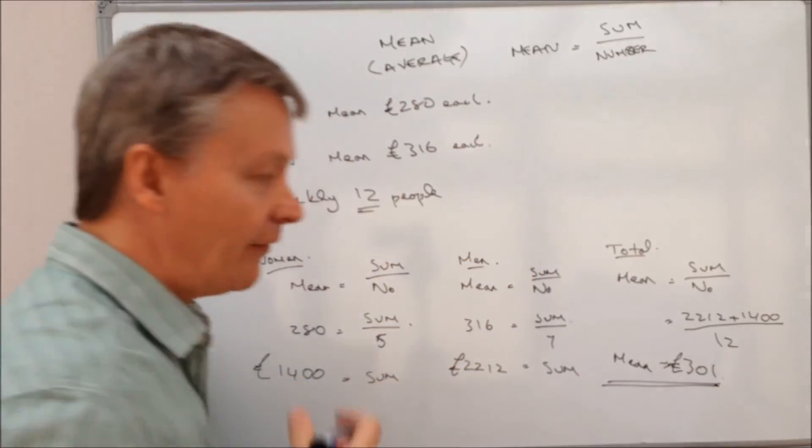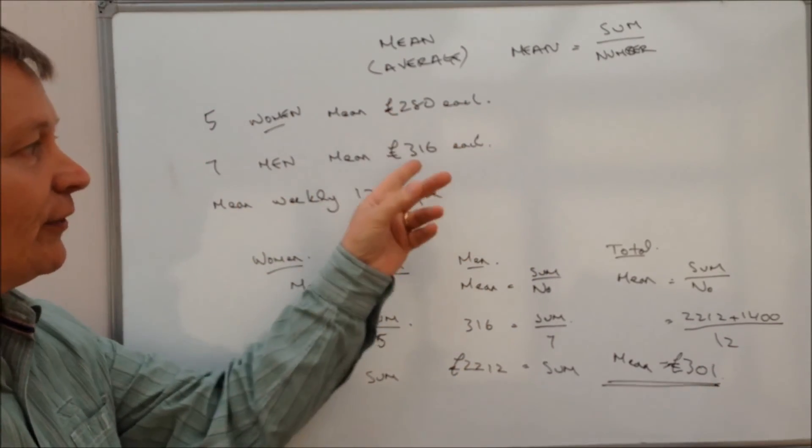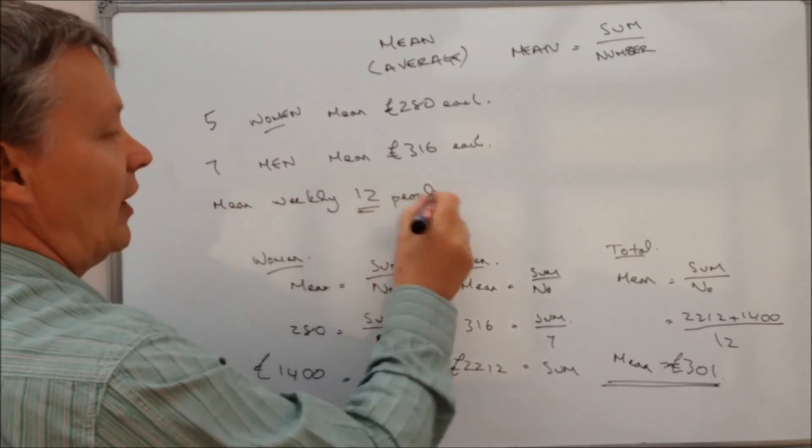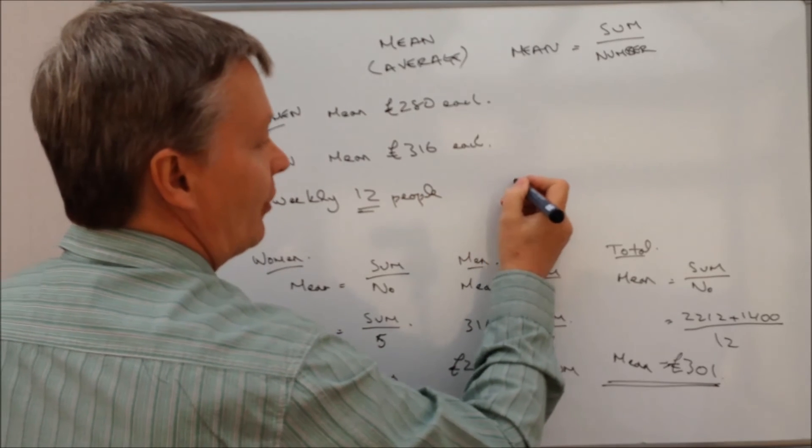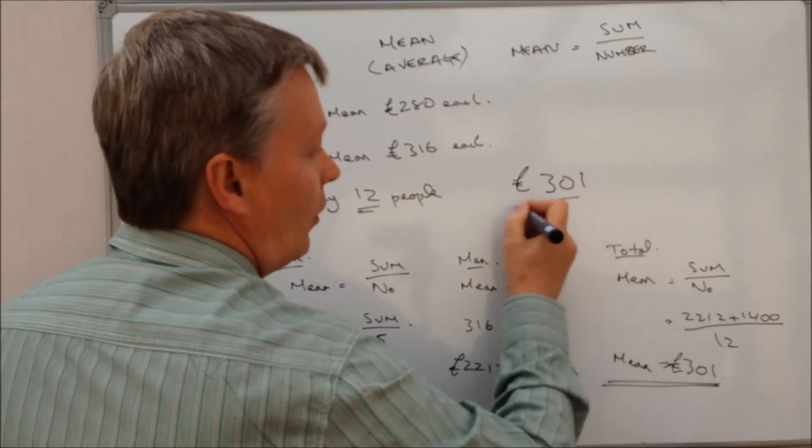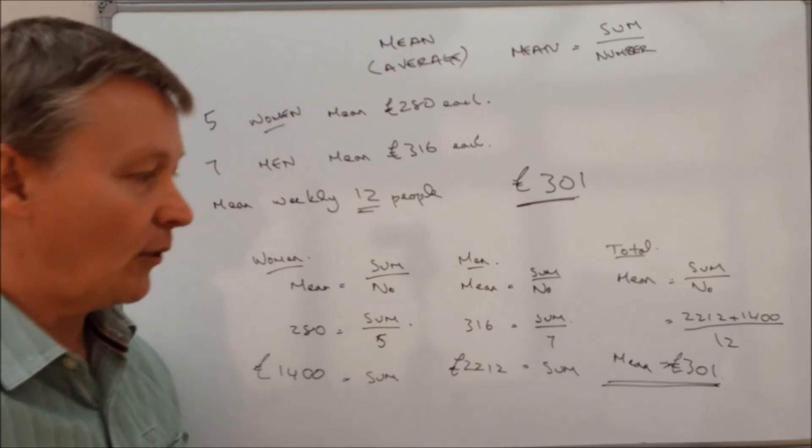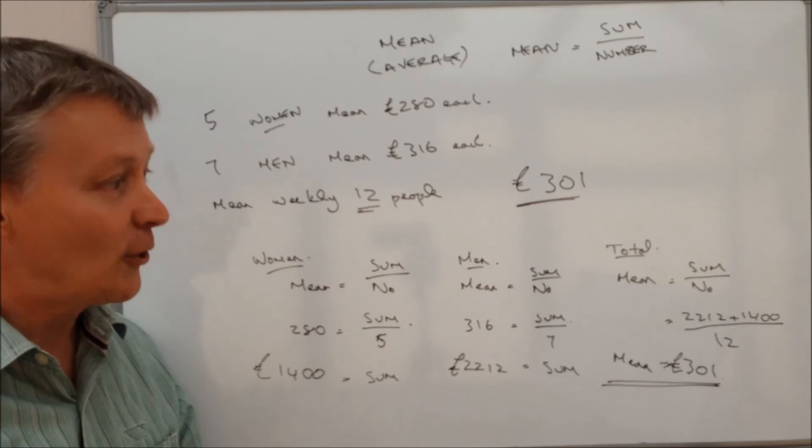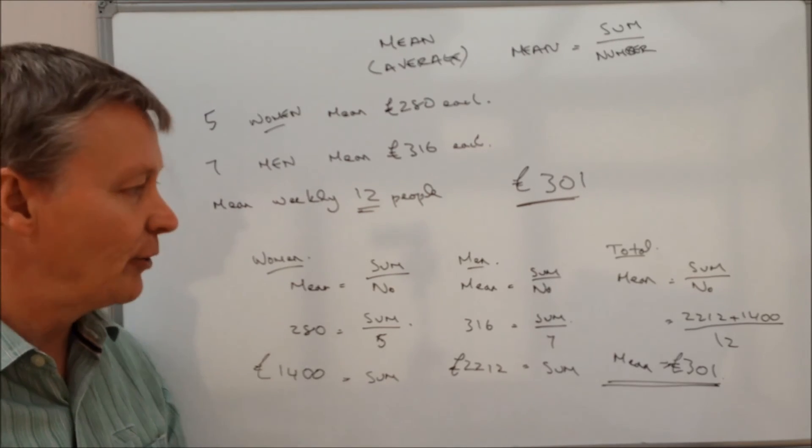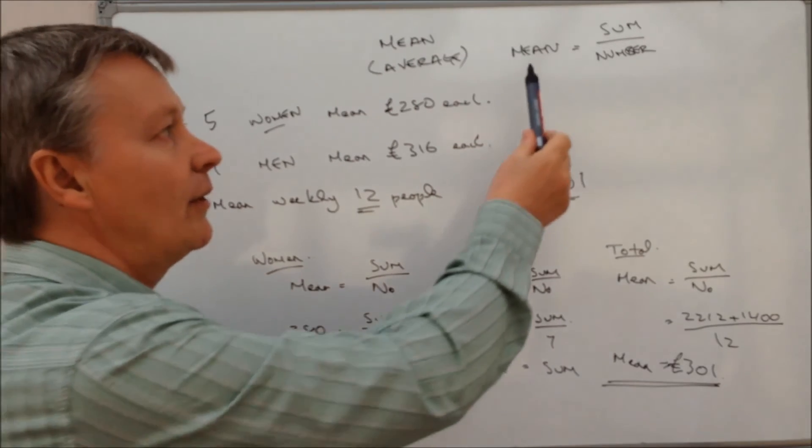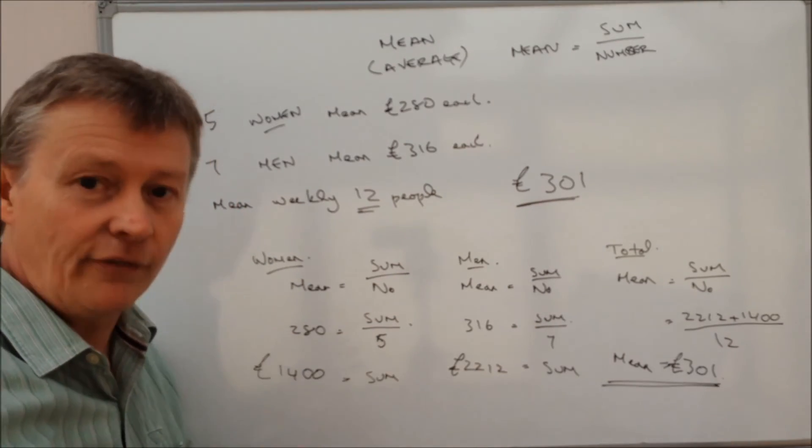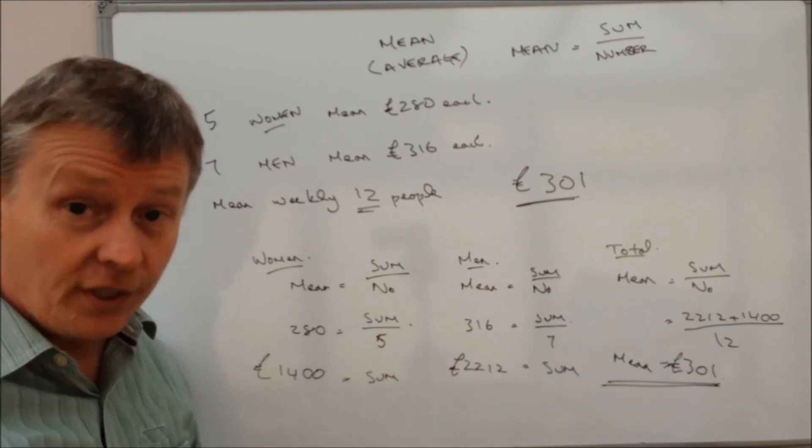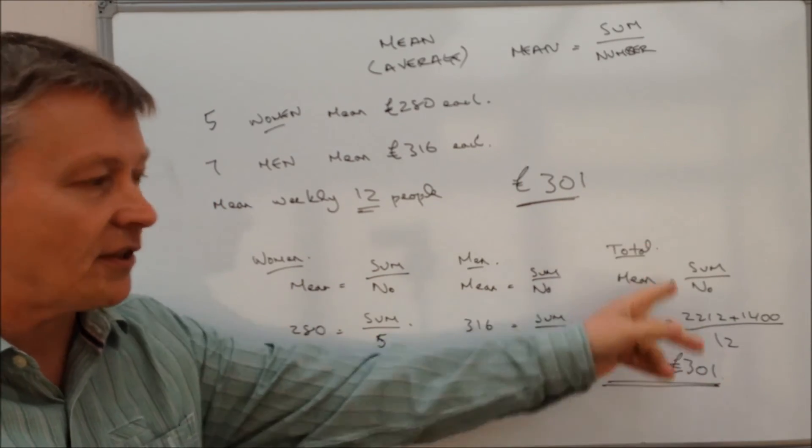And as we said before, you want to have this idea in your mind that it's going to be roughly about 300 pounds. And the actual mean weekly average for 12 people is going to be 301. That will answer your question. I hope that's okay for you. It is a bit of a wordy question. It does take a little bit of time to read through. But generally, once you've got the idea that mean equals sum over number, use that information and apply it to the situations that you've been given. And that should give you a way forward then to answer the question at the end.